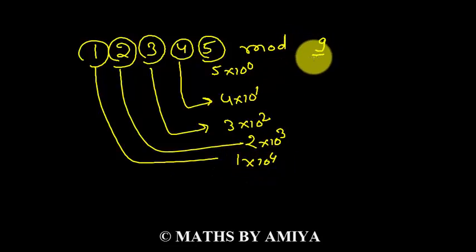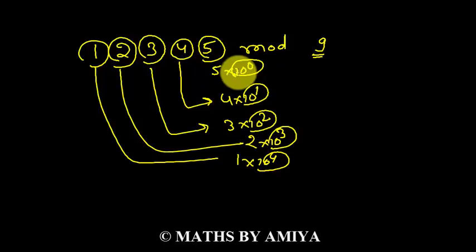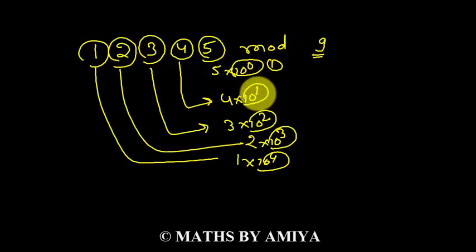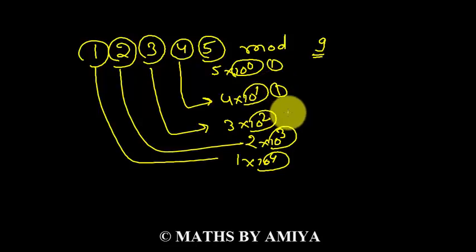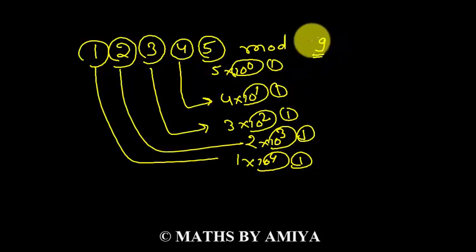When this number is divided by 9, we work on the base first, then proceed. 10 raised to power 0, that is 1, divided by 9 gives remainder 1. 10 raised to power 1 divided by 9 gives remainder 1. 10 squared divided by 9 gives remainder 1. 10 cubed, which is 1000, again gives remainder 1. 10 to the 4th, which is 10,000, gives remainder 1 when divided by 9.